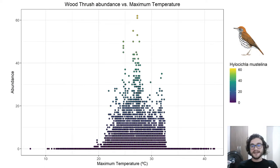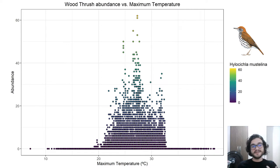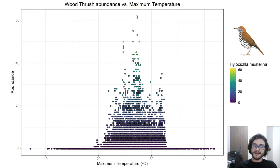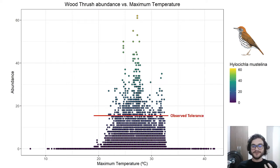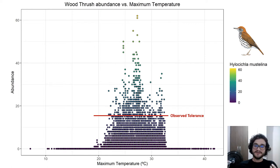We can use real-life evidence data to characterize what the species niche actually is in nature. For instance, here we have evidence data of the wood thrush, which is a North American breeding bird, against the maximum temperature. We can note that it's not present across all values within the maximum temperature range, and we can use this data to characterize what is the observed tolerance of the species to the maximum temperature in nature.